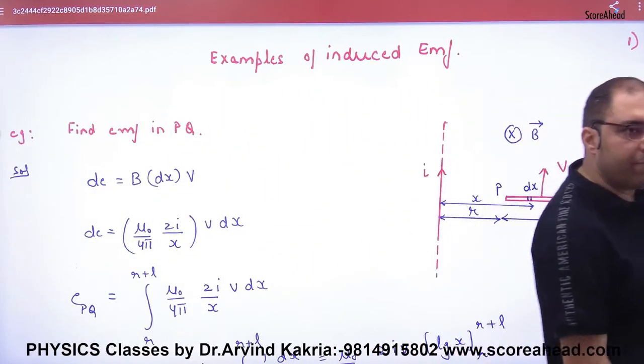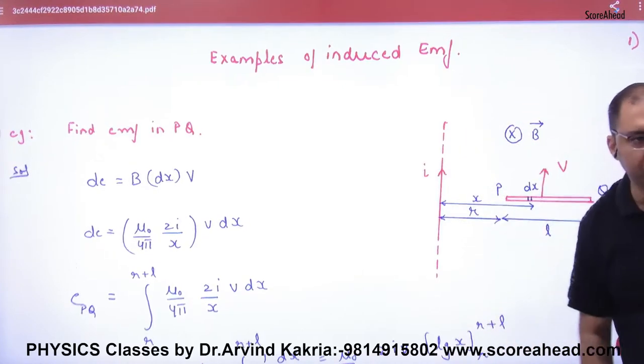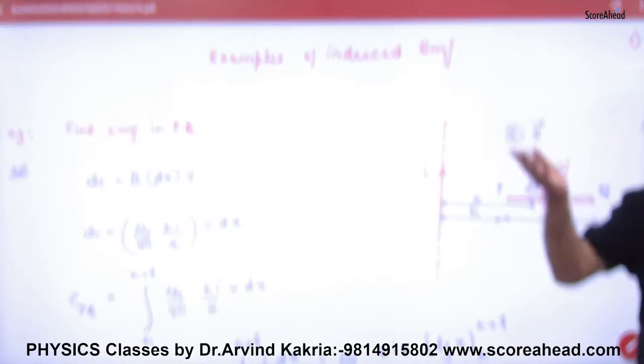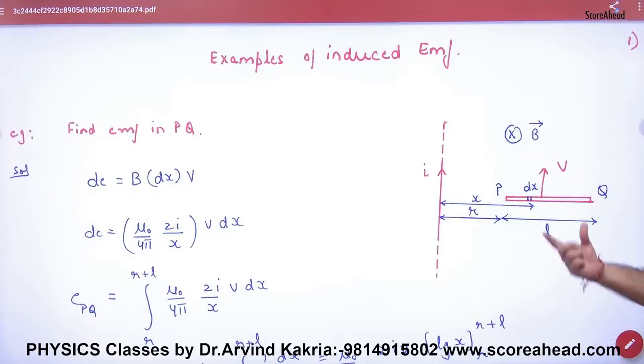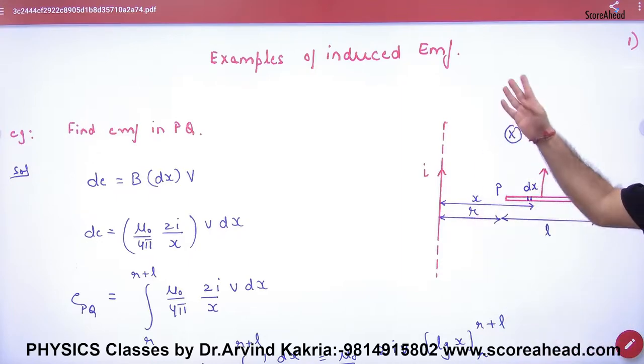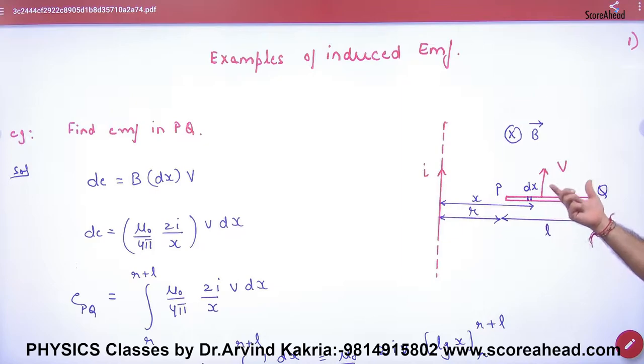Next is you have a current carrying long wire, and this will produce a magnetic field. Here is a rod moving with velocity V. So it is a current carrying wire and this is B. Now B will generate, so this magnetic field is moving. He says what EMF will develop in the rod? Now EMF's formula is BLV. You can't use it here. Why? Because B is not the same here, B is changing.